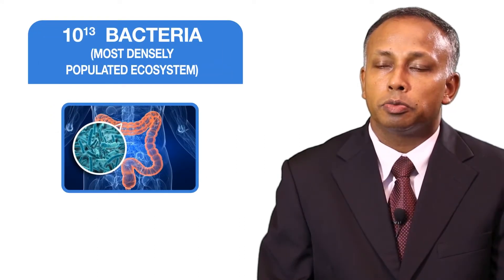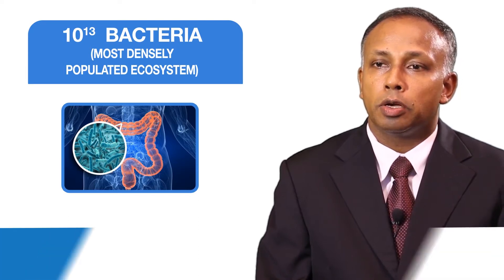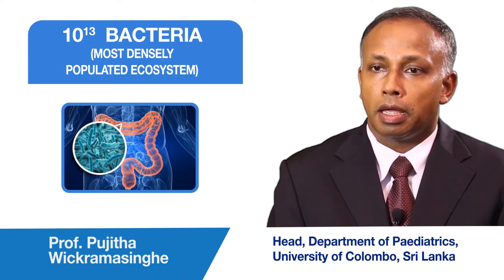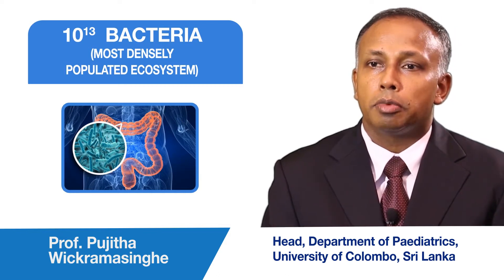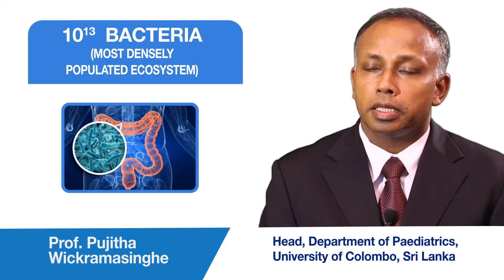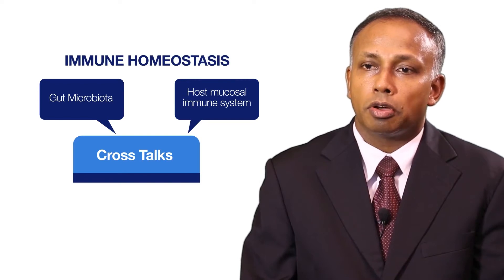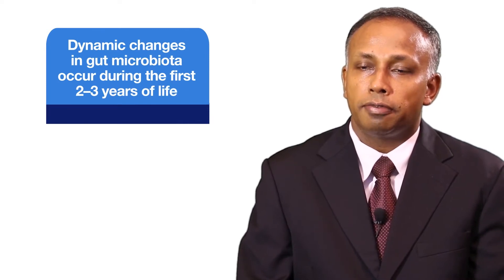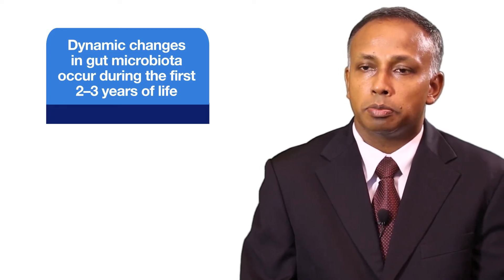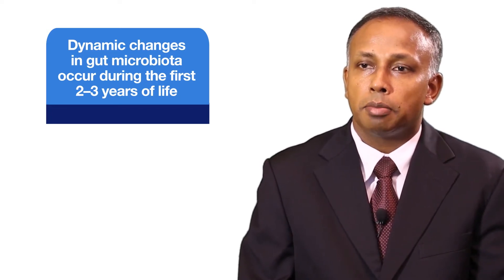The gut microbiota is one of the most densely populated ecosystems, highly adapted and personalized. There are more than 10 trillion bacteria in the gut microbiota. There is crosstalk between the gut microbiota and the mucosal immune system, which helps in the homeostasis of the immune system of the individual. During the first two to three years of life, there are high changes in the gut microbiota, which gradually increases in population.